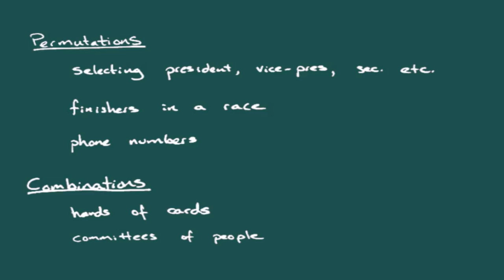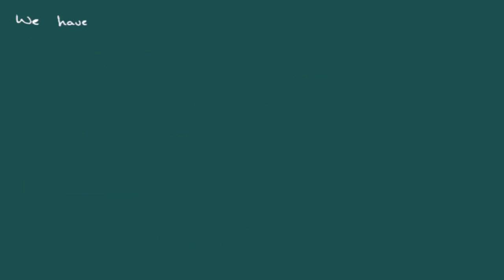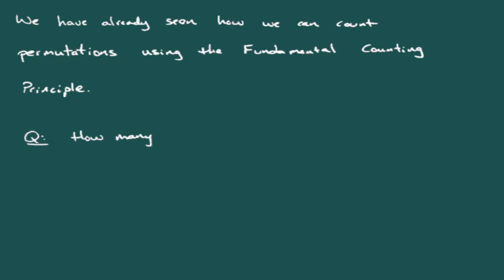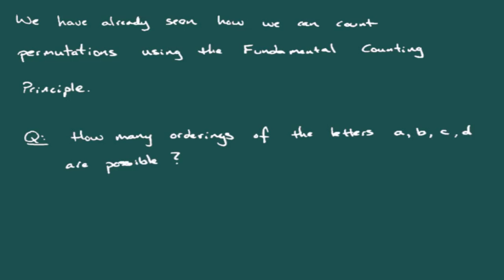We've already seen examples of counting permutations with the fundamental counting principle. For example, how many orderings of the letters A, B, C, D are possible? We imagine four slots. For the first slot we have four choices, the second three, the third two, and the fourth just one. The fundamental counting principle says we multiply: four times three times two times one gives us 24 possible arrangements.